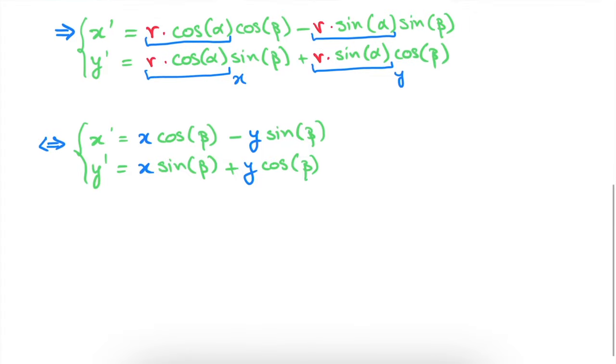And now we're already finished. We see that we've written our x and y prime, so the components of our rotated vector, as a function of the components of our initial vector x and y. And then there are these factors which incorporate the angle beta over which we rotated our initial vector.